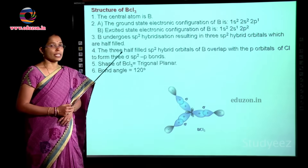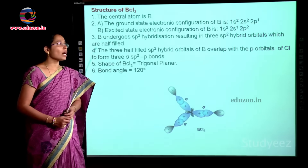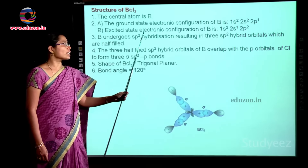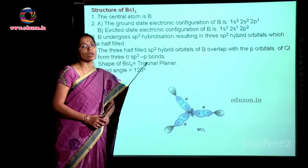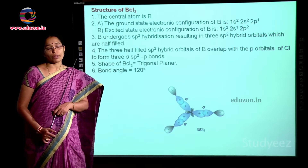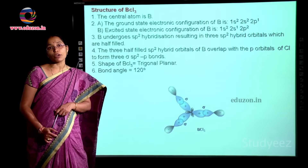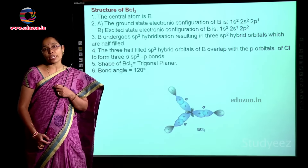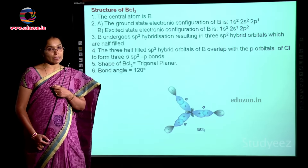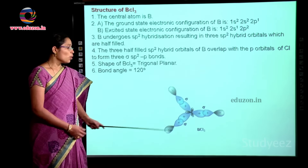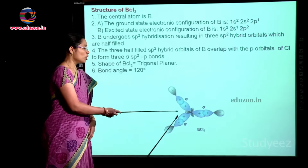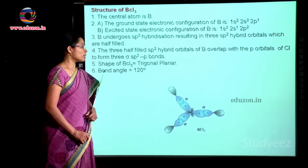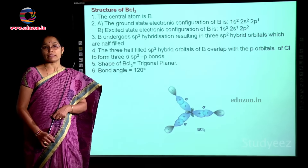For BCl₃, the central atom is boron with a ground state configuration of 1s² 2s² 2p¹, giving only one half-filled orbital. Since boron forms three bonds with three chlorine atoms, it goes to an excited state configuration of 1s² 2s¹ 2px¹ 2py¹, providing three half-filled orbitals. The one s and two p orbitals of boron intermix to produce three sp² hybrid orbitals arranged in trigonal planar shape at 120 degrees. Each sp² hybrid orbital overlaps with the p orbital of a chlorine atom to form a sigma sp²–p bond, giving BCl₃ a trigonal planar shape.